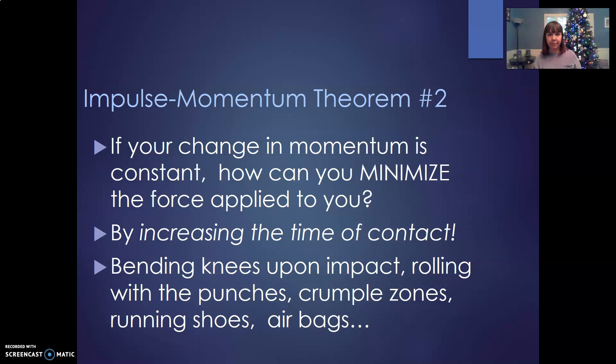So that's why you bend your knees upon impact when skydiving or doing parkour. That's why they talk about rolling with the punches when you're boxing. Whenever you get hit, you don't want to be stiff. You want to be loose and roll with the punches so that that force is applied over a longer time. Crumple zones on cars. You know that the car is going to stop if it hits this wall, but the car is meant to crumple so that you decrease that force by applying it over a longer period of time. Running shoes have the squishy foam, airbags in your car will increase the time of stopping of your body. So all of those things are meant to increase the time of impact to decrease the force at any one time.